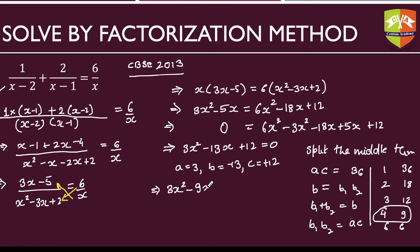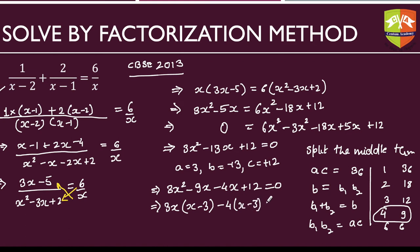So we write 3x squared minus 9x minus 4x plus 12 equals 0. Factoring: 3x is common from the first two terms giving 3x(x minus 3), and minus 4 is common from the last two giving minus 4(x minus 3). Hence (x minus 3)(3x minus 4) equals 0.